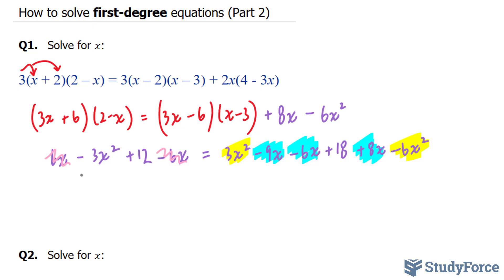The next step is to bring all the letter terms to one side and all the constants to the other. So I'll take this over to that side, and I'll take the plus 18 over to the left side.